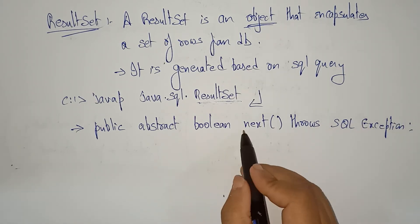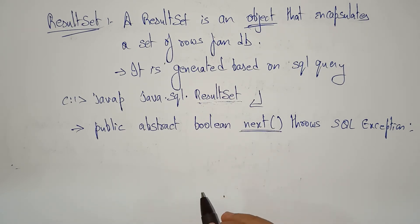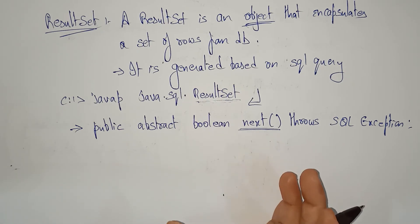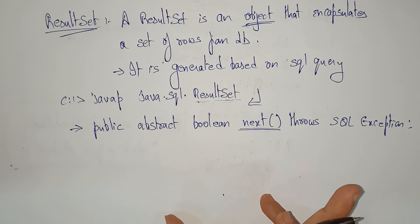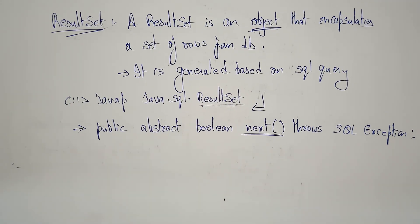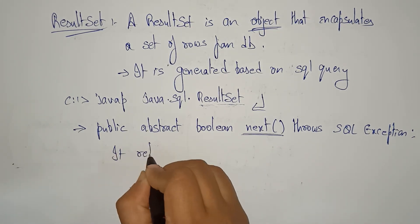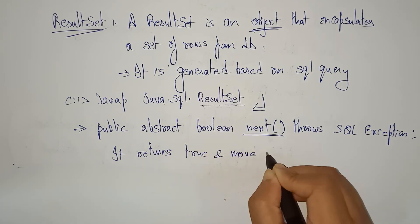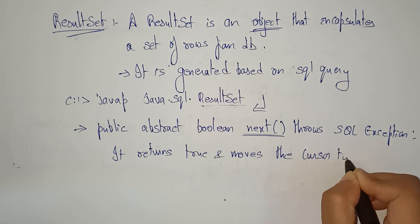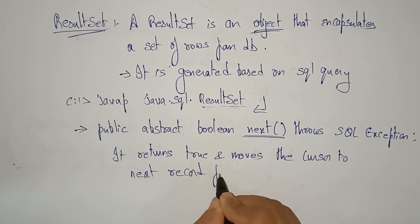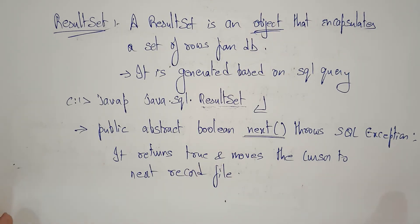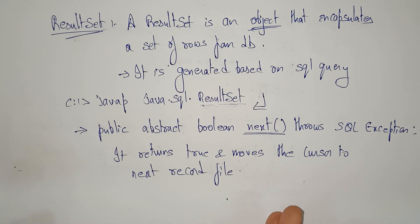The first method I'm taking is: public abstract boolean next() throws SQLException. This method returns true and moves the cursor to the next record. If a record is present it returns true, and the cursor moves to the next row.